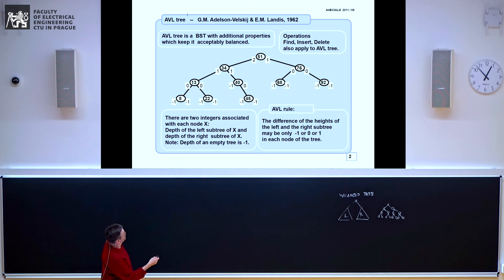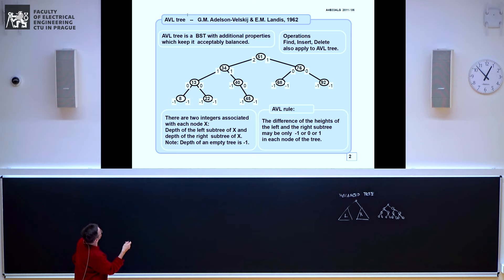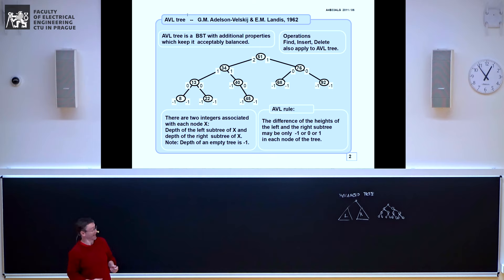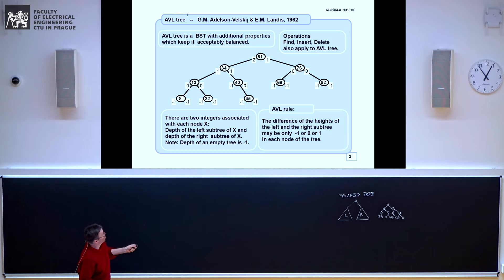The difference of the heights or depths of the left and right subtree may only be minus one, zero, or one — that is, the difference between the two balance values stored in each node. In leaves the difference is zero, sometimes it is plus one, and sometimes minus one. If every node in the tree has this property, we call it an AVL tree.